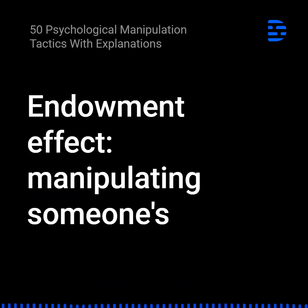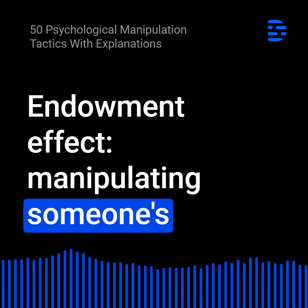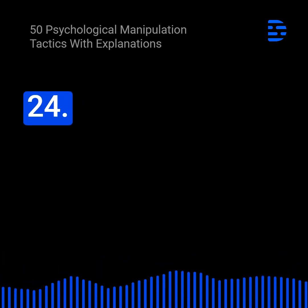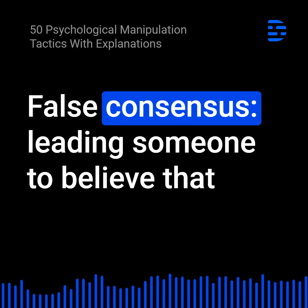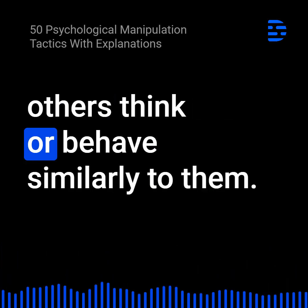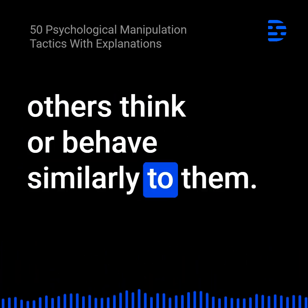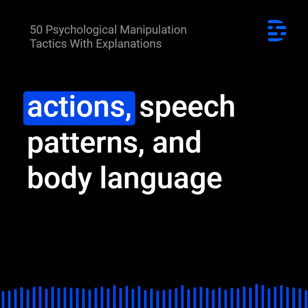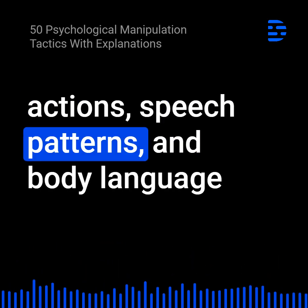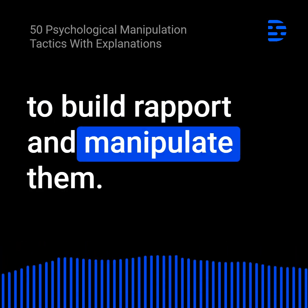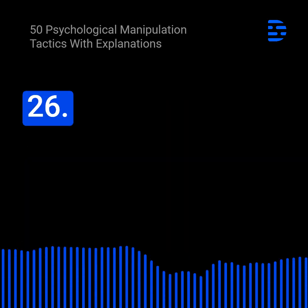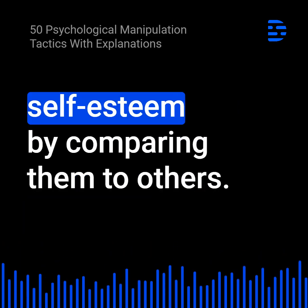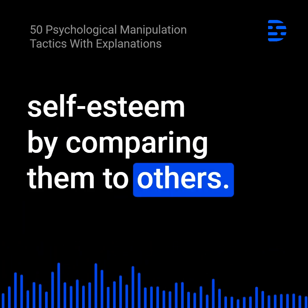23. Endowment effect: Manipulating someone's attachment to something by giving it to them. 24. False consensus: Leading someone to believe that others think or behave similarly to them. 25. Mirroring: Mimicking someone's actions, speech patterns, and body language to build rapport and manipulate them. 26. Social comparison: Influencing someone's self-esteem by comparing them to others.